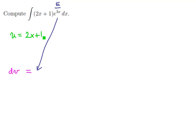So u will be 2x plus 1, and dv will be e to the 3x and then a dx.